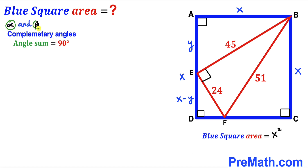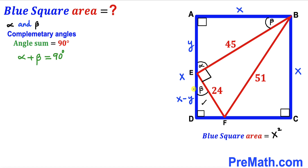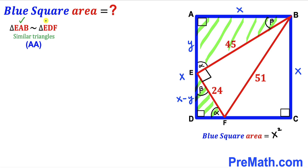Let's assume alpha and beta are two complementary angles, meaning alpha plus beta equals 90 degrees. If I label one angle alpha, then since the adjacent angle is 90 degrees, the remaining angle must be beta. Similarly in triangle E, D, F, if one angle is beta and another is 90 degrees, then the third angle must be alpha. Therefore we conclude that the two right triangles — right triangle E, A, B and right triangle E, D, F — are similar triangles according to the angle-angle similarity theorem.